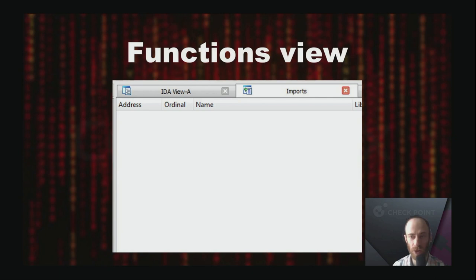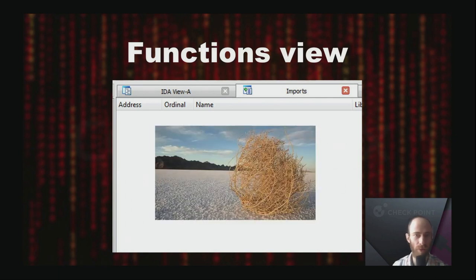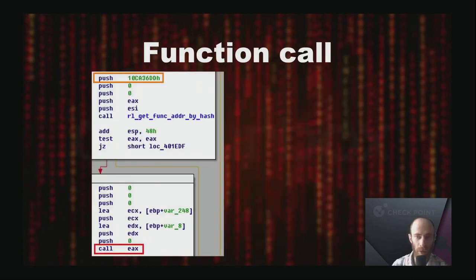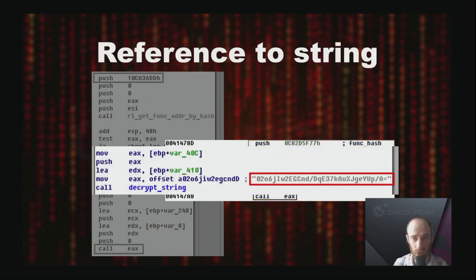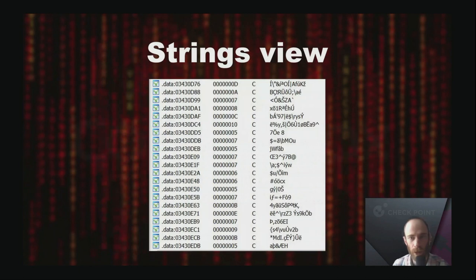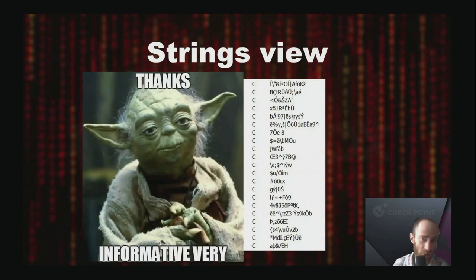After digging deeper, we see the mechanism of how functions are called: hash values are passed to the resolution function, and only then the target function is called. Strings don't make the analysis easier, as they are present only in obfuscated form — most strings are encrypted and we can't see them. If we check for any meaningful strings at all, what we find is not informative.